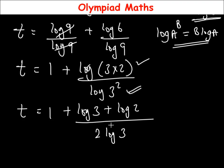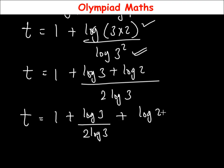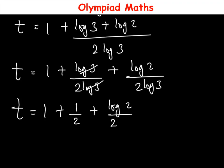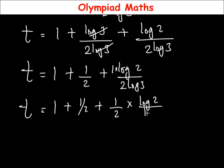We can simplify this further such that the value of t is equal to 1, then plus log 3 over 2·log 3, then plus log 2 over 2·log 3. Now log 3 divided by log 3 gives 1 over 2, so t equals 1 plus 1 over 2, plus log 2 over 2·log 3. We can bring out the 1 over 2 and write it as 1 over 2 times log 2 over log 3.